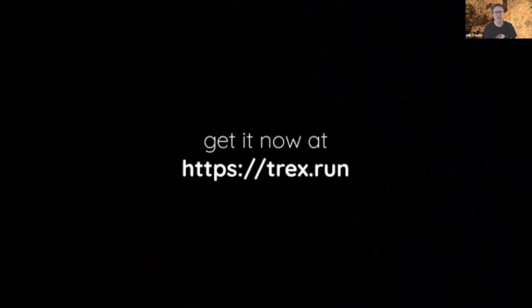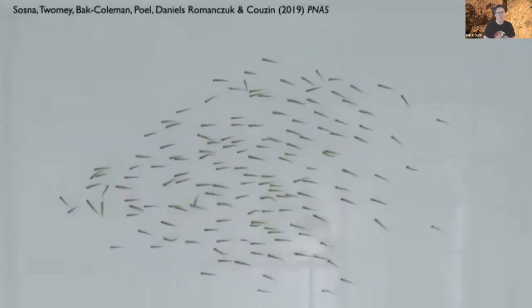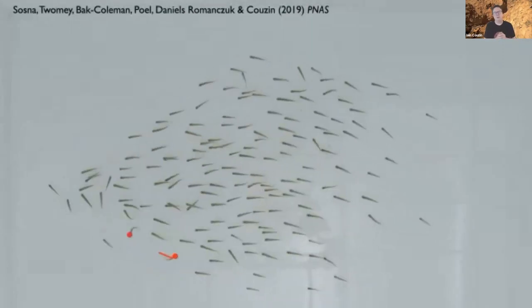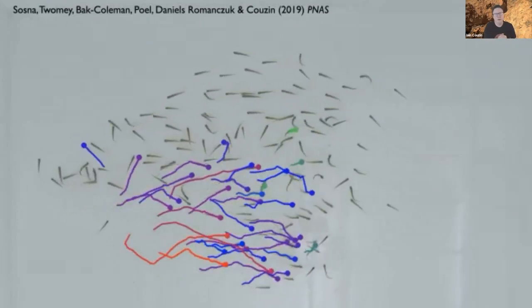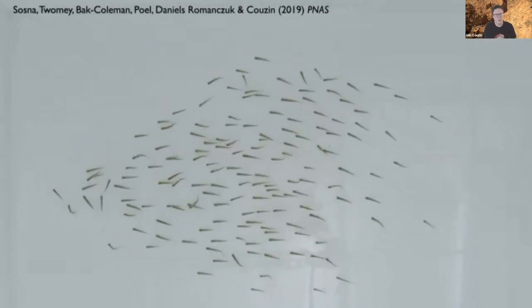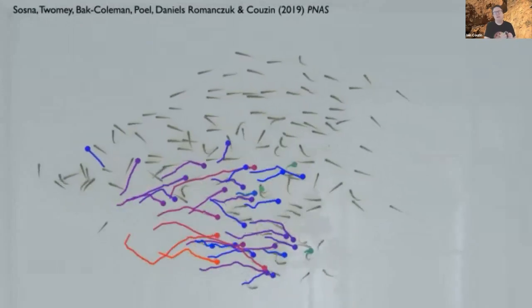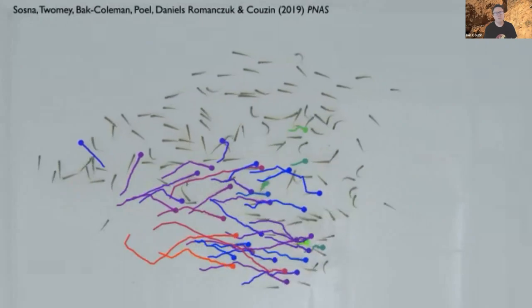We develop these tools for visualization and analysis and they're all free and open source. This allows us to look at a hallmark of collective behavior: we can now track individuals and look at how information flows through the system, so the turning of one or a few individuals can lead to social contagion through the group.